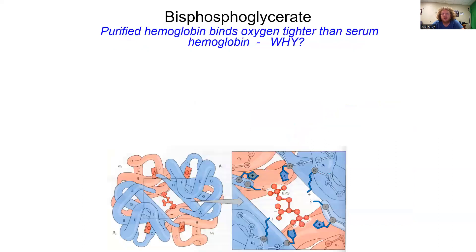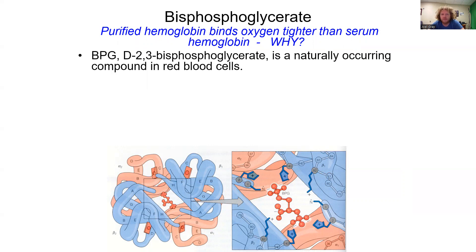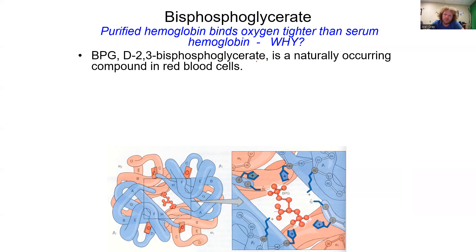Factors affecting hemoglobin: oxygen is an allosteric effector that encourages binding of more oxygen; carbon dioxide leads to release of O2. The third effector is 2,3-bisphosphoglycerate (BPG). The '-ate' suffix indicates it is an anion — it's a naturally occurring compound.